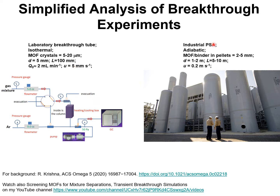In contrast, industrial PSA units are operated under adiabatic conditions. The adsorbent, be it zeolite, MOF, or activated carbon, is used in pelletized form and the diameter of the pellets is of the order of 2 to 5 millimeters. The diameter of the adsorber is of the order of 1 to 2 meters, usually with a height of 5 to 10 meters depending on the process application. The superficial velocity of the gas mixture in the fixed-bed adsorber is of the order of 20 centimeters per second.